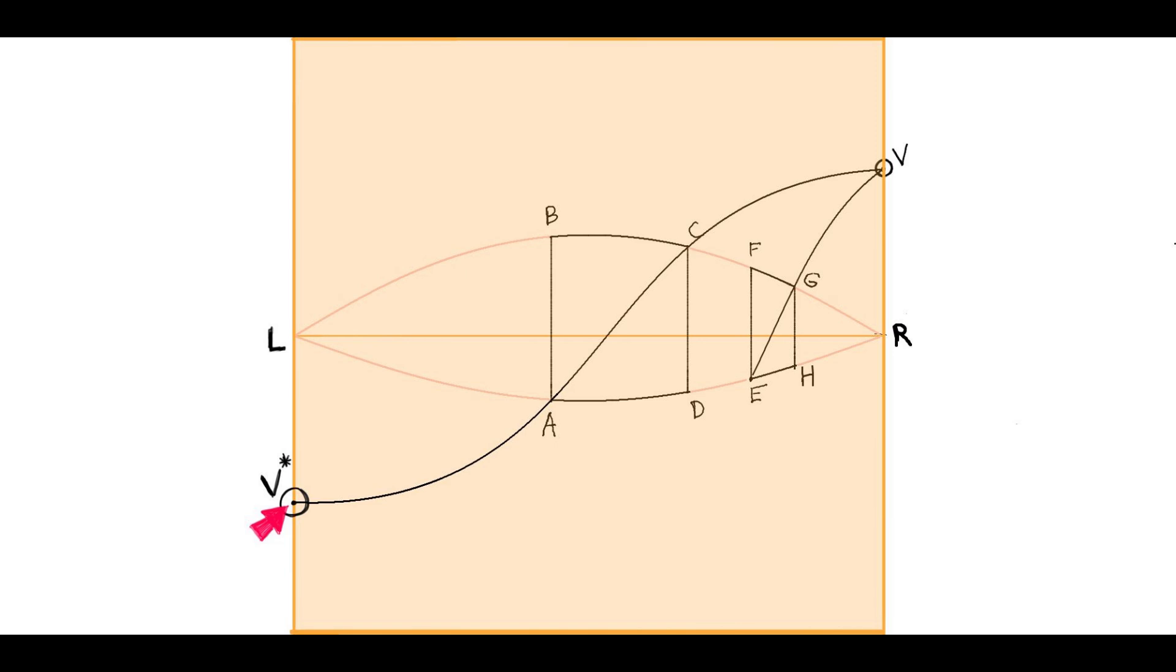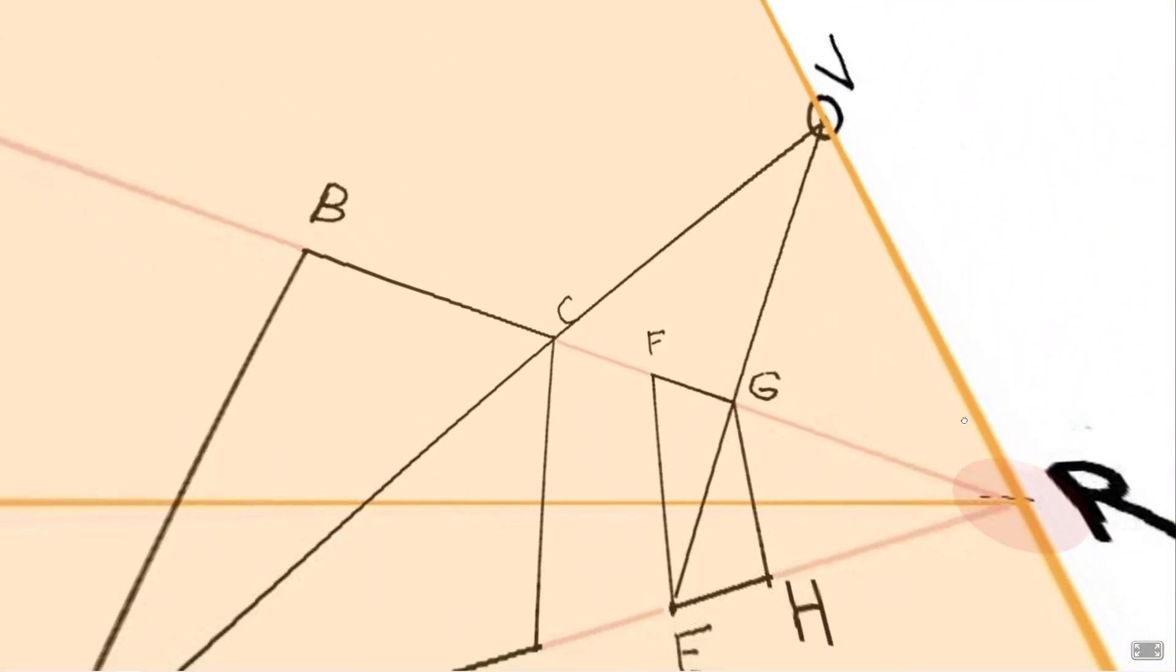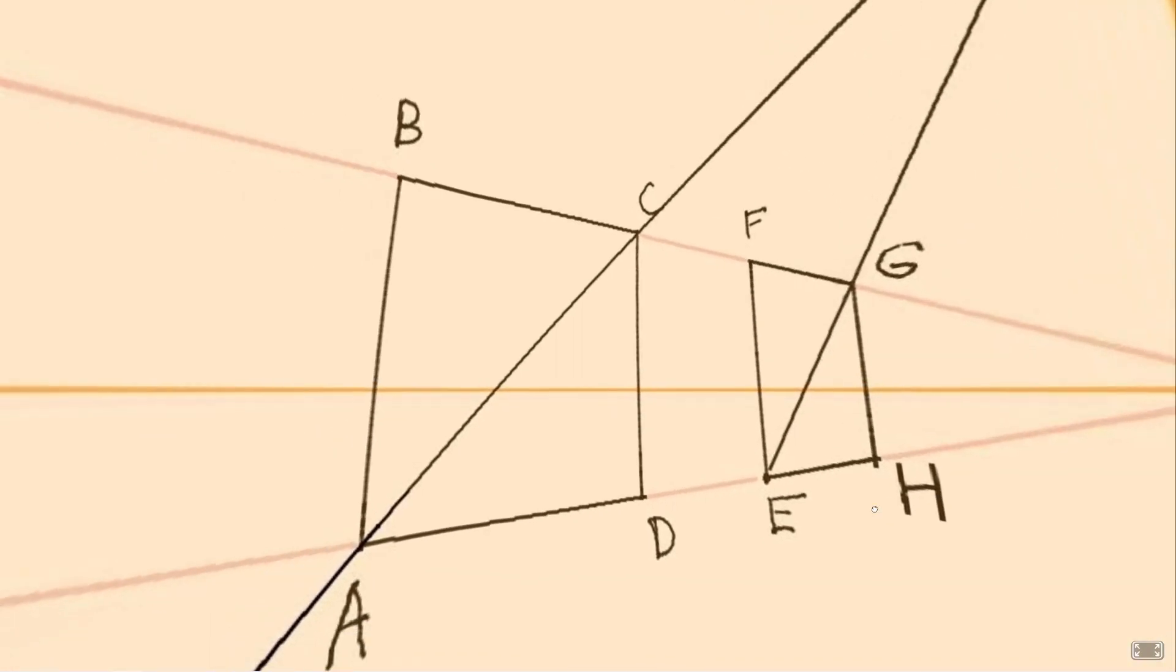Now, I know I am still asking you to accept a few things on faith. Namely, why are the vanishing points on the edge of the plane's image? It sounds plausible, but I haven't proved it. We should really investigate the cause of this and we will do so quite soon as we circle back to the foundations of spherical perspective.